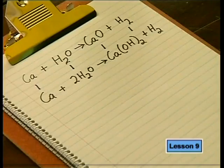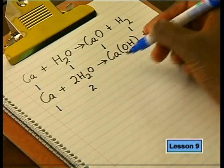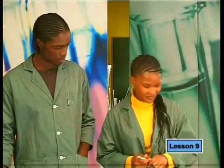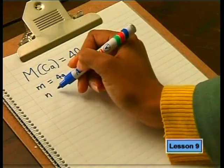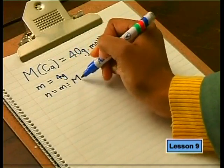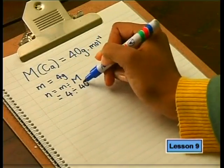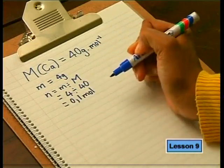The balanced equations show the mole ratio of reactants. Before finding how much water is needed, we must calculate the moles in our 4-gram calcium sample. The relative atomic mass of calcium is 40, and the mass is 4 grams. Using n = m/M, substituting the values, we find 0.1 moles of calcium in the sample.